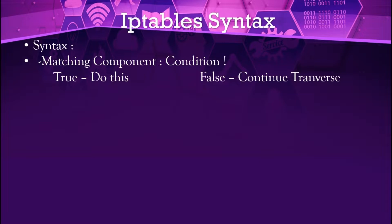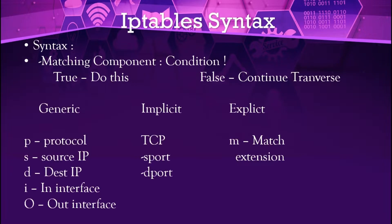The matching component defines the condition: if the condition is true then perform the action, if false then continue the transfer — meaning it will continue the flow of network traffic. The matching flags are: -p for protocol, -s for source IP, -d for destination IP, -i for in-interface, -o for out-interface, --sport for source port, and --dport for destination port.